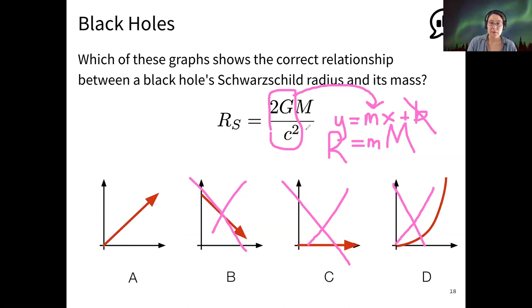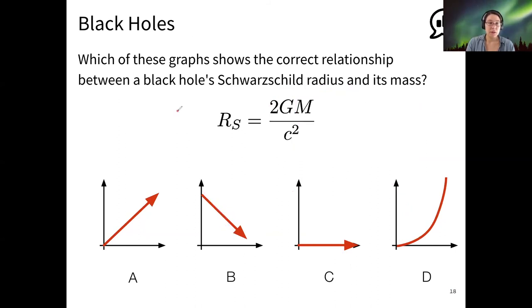If you were thinking that maybe it should look like a parabola because there's a square in the equation, I feel you. But since that's a constant, then it just wraps up into a constant. It's not our variable. Our variable is the mass. So choice A is the correct relationship between the Schwarzschild radius and the mass.